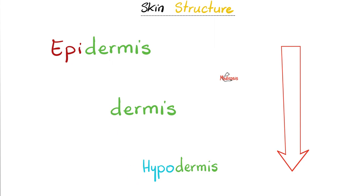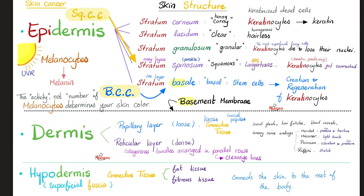From superficial to deep: epidermis, then dermis, then hypodermis. The epidermis has stratum corneum, stratum lucidum, stratum granulosum, stratum spinosum, and stratum basale, which stands upon the basement membrane. In the dermis we have the papillary layer, which is loose, and the reticular layer, which is dense.